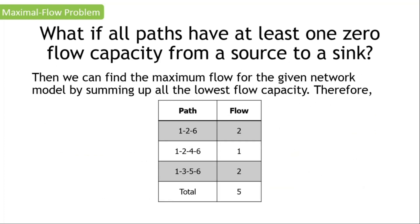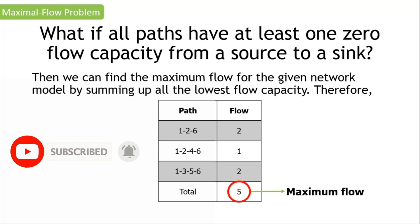When all paths have at least one zero flow capacity from a source to a sink node, we are now able to find the maximum flow by summing up all the lowest flow capacities chosen in step two. Remembering all the paths from the first to third iteration: path one, two, six with a lowest flow capacity of two; path one, two, four, six with a lowest flow capacity of one; and path one, three, five, six with a lowest flow capacity of two — giving a total of five. This five is our maximum flow for our network.